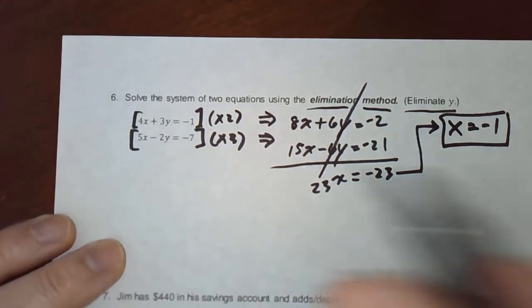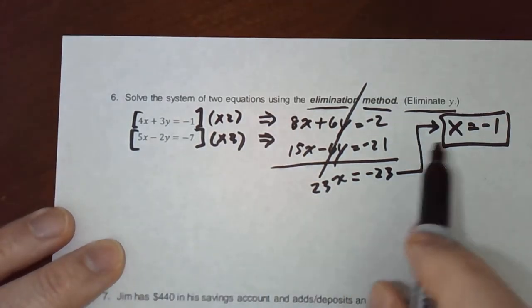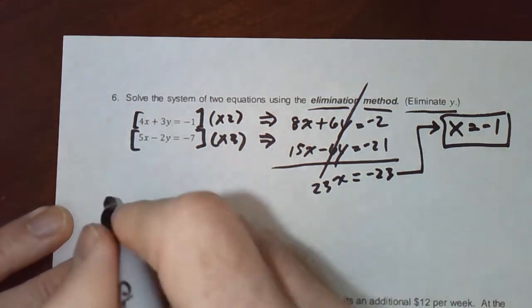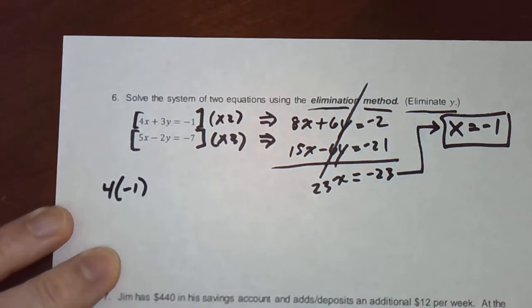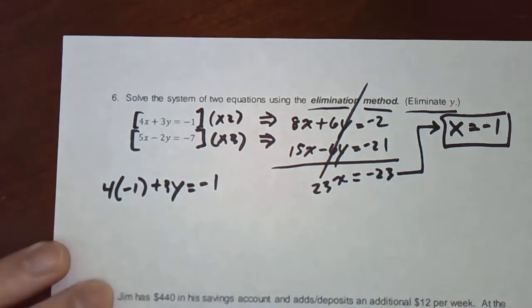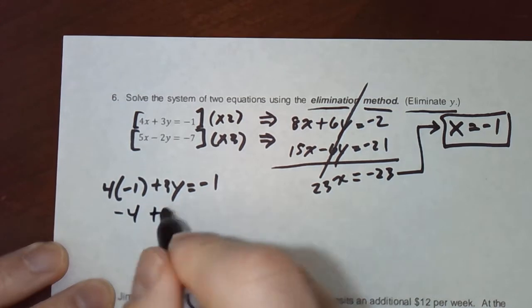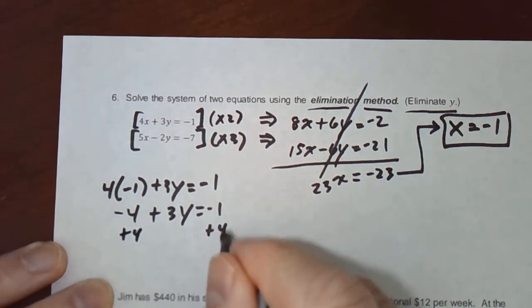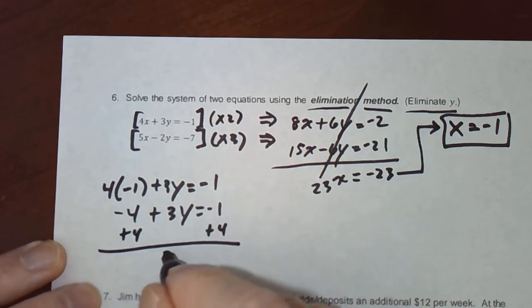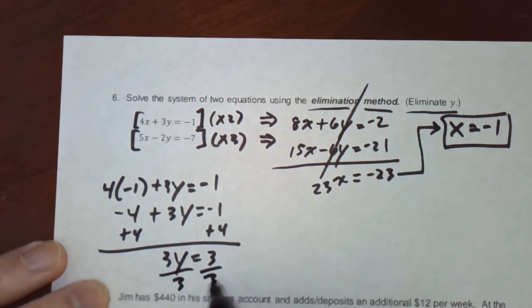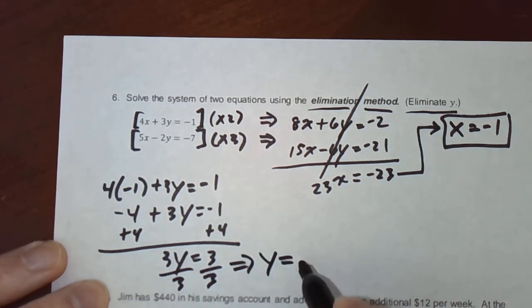Now, let's take equation number 1 or 2. It doesn't matter. And plug in x equals negative 1 to figure out what y is. So equation number 1 would be 4 times negative 1 plus 3y is equal to negative 1. So that's negative 4 plus 3y equals negative 1. And then we're going to add positive 4 to both sides. That gives us 3y equals 3. Well, that's simple. Divide both sides by 3 gives us y equals 1.